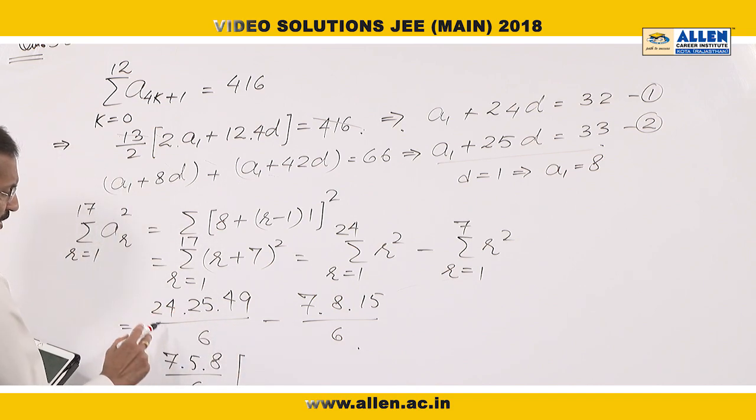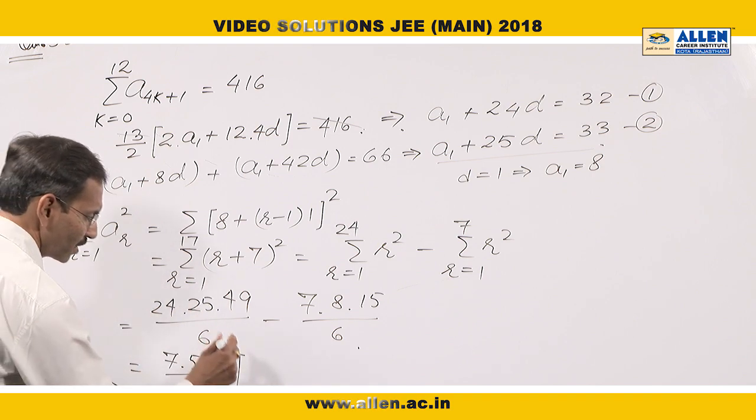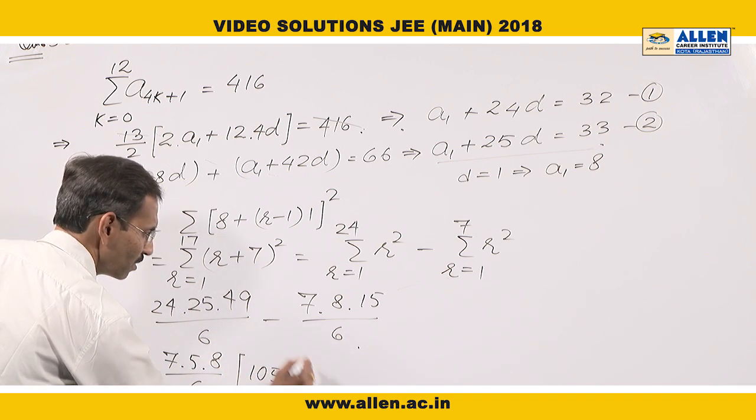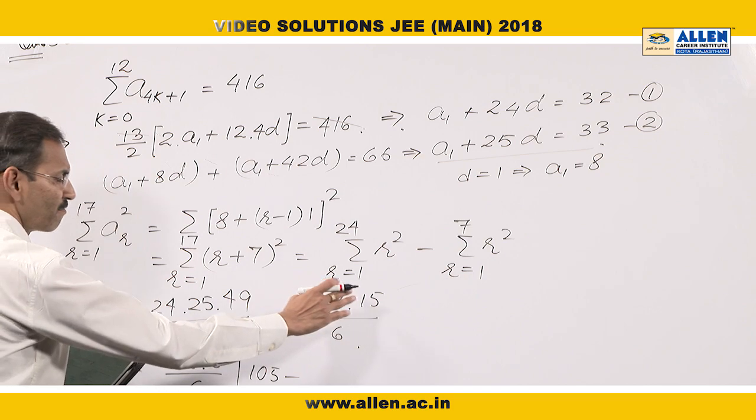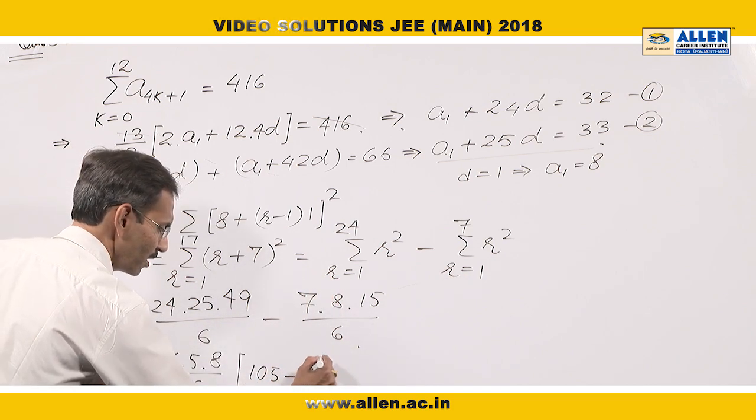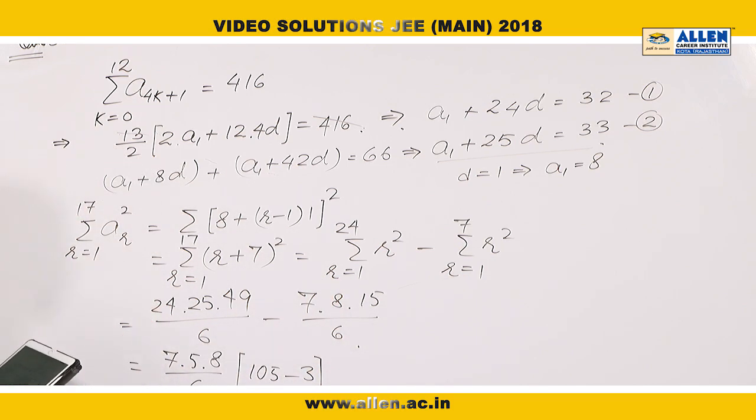So the remaining will be 3 times 5 times 7 gives us 105 minus 3, which is 102. Cancelling 102 by 6.